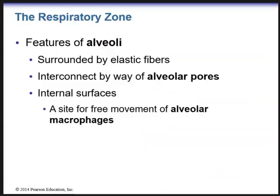Here is a detailed view of the respiratory membrane. Type 2 alveolar cells secrete surfactant to release surface tension, and capillaries are very closely associated with the alveoli so that gas exchange can occur across the membrane. Red blood cells uptake oxygen that diffuses across the alveoli, and carbon dioxide moves from the blood into the alveoli to be exhaled. Alveoli are surrounded by elastic fibers and interconnected by alveolar pores. The internal surface is a site for free movement of alveolar macrophages, which ingest particles and move them back to the pharynx to be expelled.